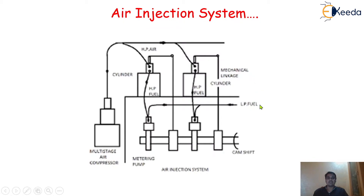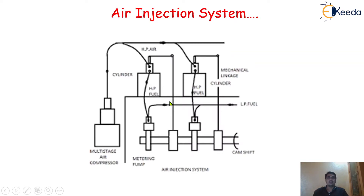Why is it called the air injection system? This is a very important question. First, we are going to understand the construction of the air injection system. If you see in this particular diagram, on the left hand side we have one element and this is called the multi-stage air compressor. This multi-stage air compressor is connected with the help of one airline connection to the particular cylinder of the engine. Let us first understand the construction, then after we will understand the working principle.